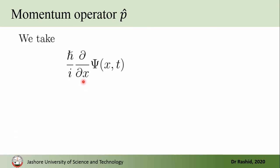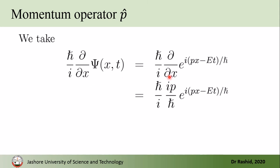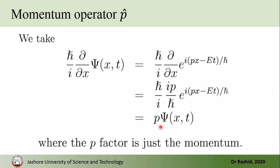Now if we take (ℏ/i)(∂/∂x) as an operator and act this operator on the wave function ψ, we have after differentiation (ip/ℏ) e^(i(px − Et)/ℏ). If we simplify, we have p·ψ. Here p is the momentum and it is a number.